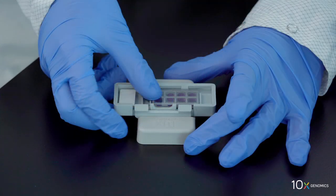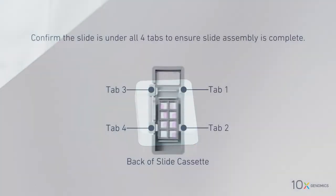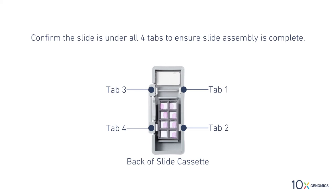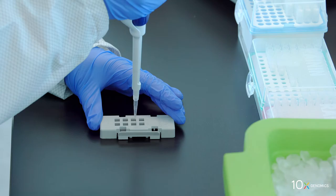Remove the slide cassette from the alignment tool while pressing the slide against the gasket. We have assembled the slide cassette. Next we will permeabilize the tissue.